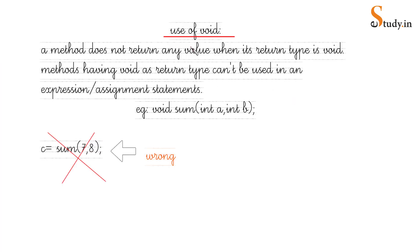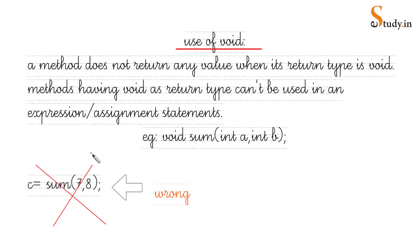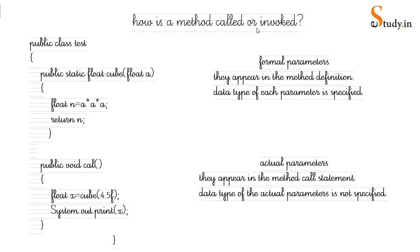What is the use of void? A method that does not return any value has void as its return type. Methods with void as return type cannot be used in an expression or assignment statement. For example, if 'void sum(int a, int b)' is declared, writing 'c = sum(7, 8)' would be wrong because sum does not return any value.